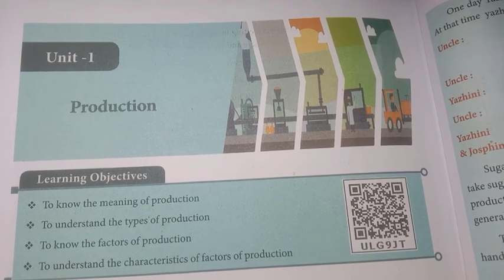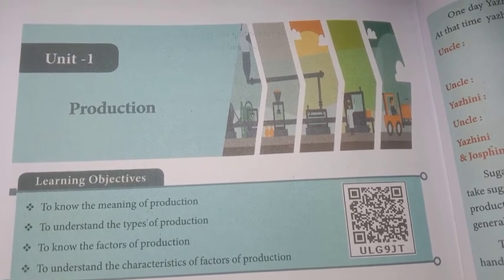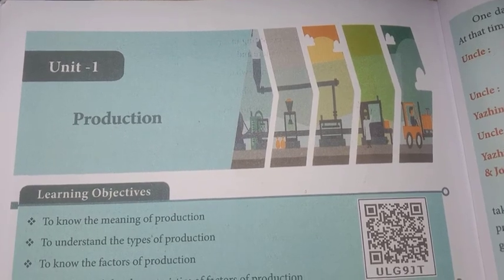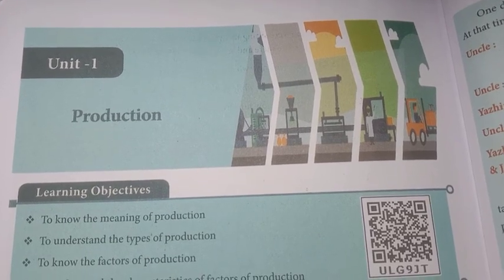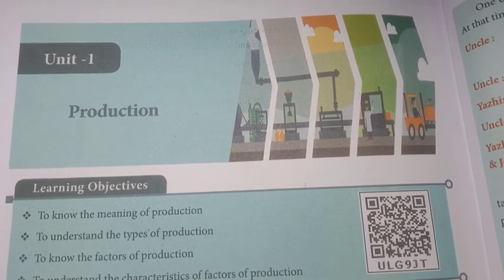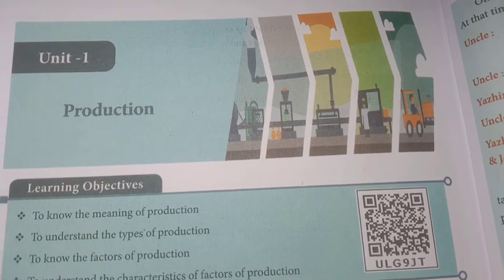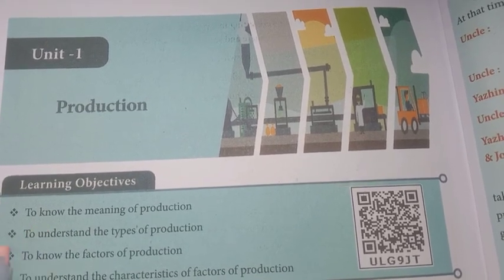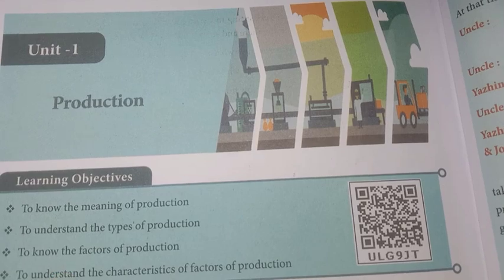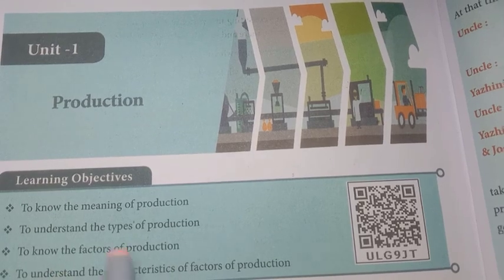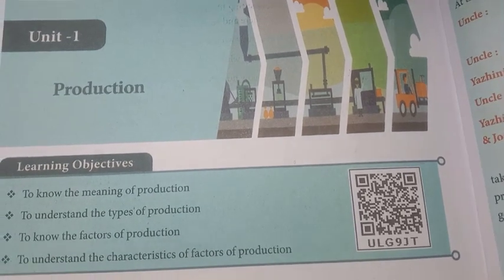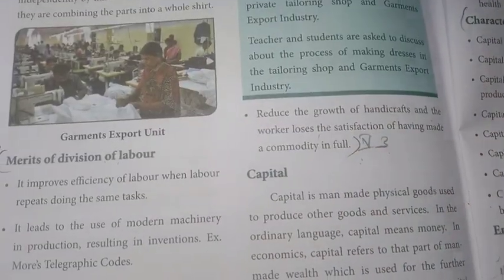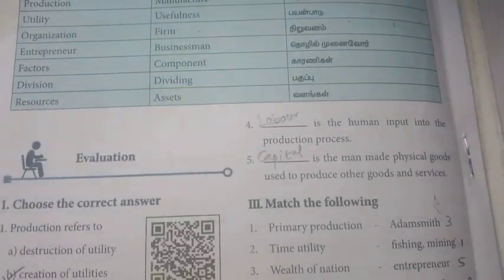Greetings everyone, welcome to our channel Student Station. If you are not subscribed to our channel, please subscribe. This video is 7th standard term 1, social science, economics unit 1 - Production. In this lesson, we have already uploaded the book back exercise. Playlist is 7th standard social science term 1. You can see all the lessons' book back exercises. In this class, we are covering the book back exercise with explanation and key points.